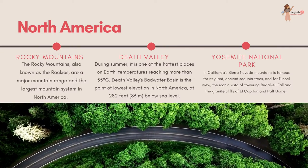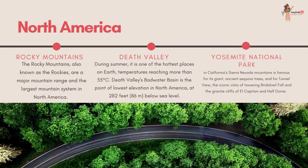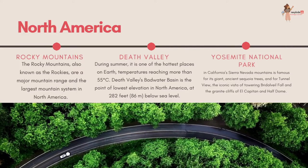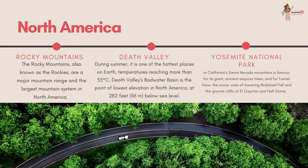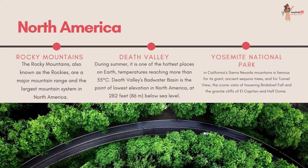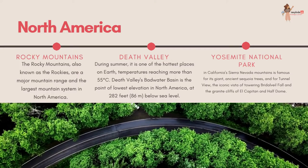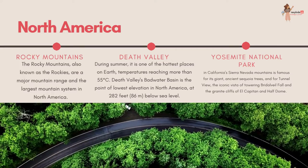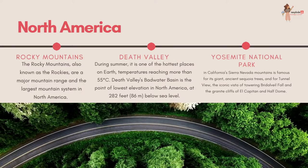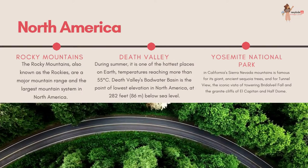During summer, Death Valley is one of the hottest places on earth, with temperatures reaching more than 55 degrees Celsius. Death Valley's Badwater Basin is the point of lowest elevation in North America, at 86 meters below sea level.